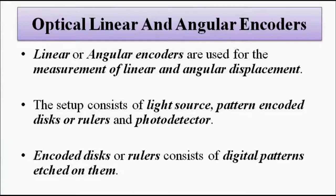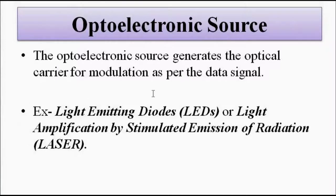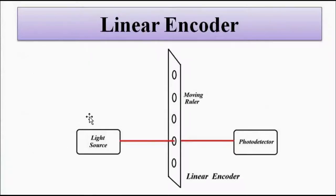The optoelectronic source is like any other source which produces light — it generates the optical signal. It can be anything: a light emitting diode or a laser (light amplification by stimulated emission of radiation). These have been discussed in the optoelectronics devices and systems playlist. The optoelectronic source produces the light, and then we have a disc or a ruler.